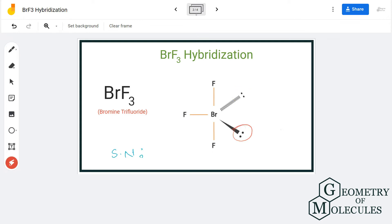To know the steric number of any atom, we have to know the number of lone pairs attached to it as well as the number of atoms attached to it. So here there are two lone pairs of electrons on the bromine atom and there are three fluorine atoms that are bonding with the bromine atom.